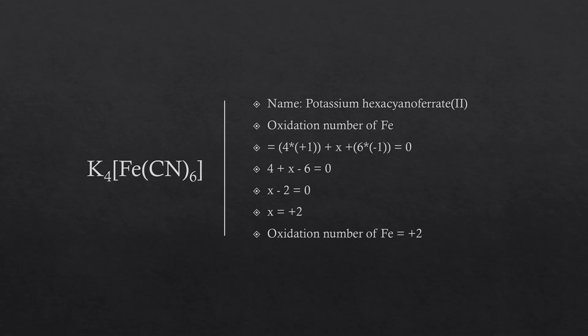Therefore, the name is potassium hexacyanoferrate(II). The name ends in -ate because Fe is in the coordination sphere of a negative complex ion. Whenever the complex ion is negatively charged, the metal name ends in -ate. Hence, potassium hexacyanoferrate(II).